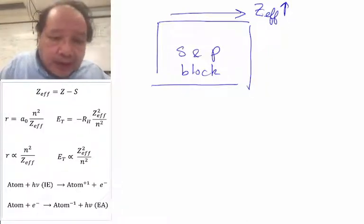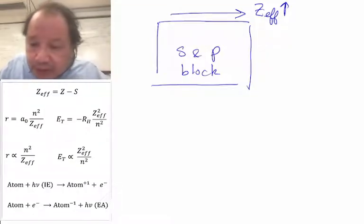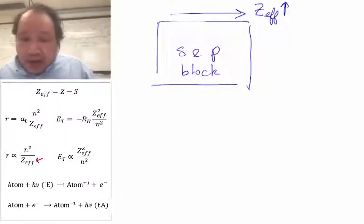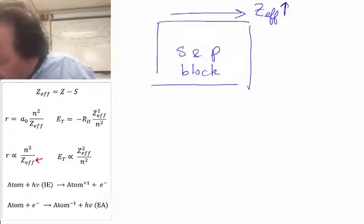And as Z_eff increases, it's in the denominator here. So with larger Z_eff means that R gets smaller. So R is getting smaller.